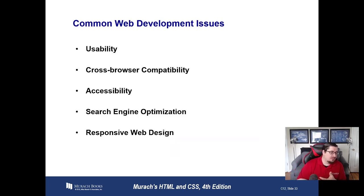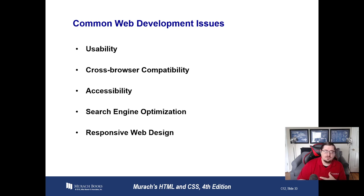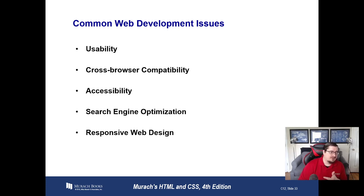The last piece we want to talk about in this lecture is some common web development issues that arise. They fall into five major categories: usability, compatibility, accessibility, search engine optimization, and responsive web design.